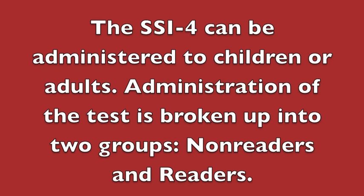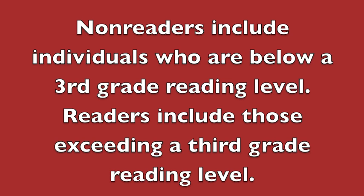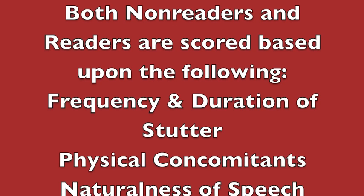The SSI-IV can be administered to children or adults. Administration is broken up into two groups: non-readers, who are below a third grade reading level, and readers, who exceed the third grade reading level. Both groups are scored based on frequency and duration of stuttering, physical concomitants, and naturalness of speech.